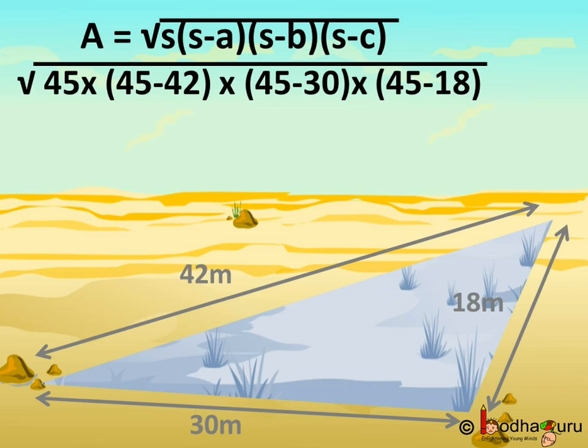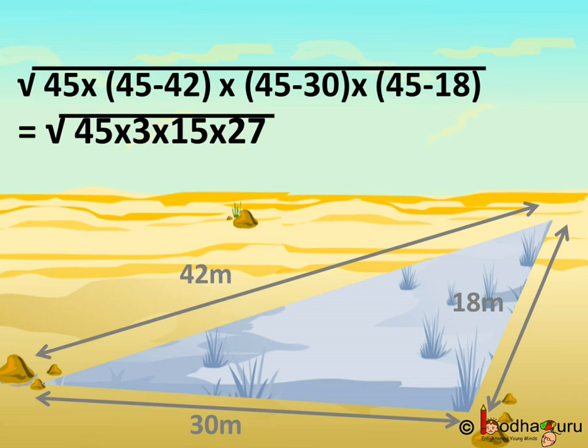Now, let us put the value of three sides. Here, small a is equal to 42, B is equal to 30, and C is equal to 18 meter. So, by putting the value of S and A, B, C, we get area equal to square root of 45 multiplied by 45 minus 42 multiplied by 45 minus 30 multiplied by 45 minus 18. That is, we get square root of 45 multiplied by 45 minus 42 is 3 multiplied by 45 minus 30 which is equal to 15 multiplied by 45 minus 18 which is 27.